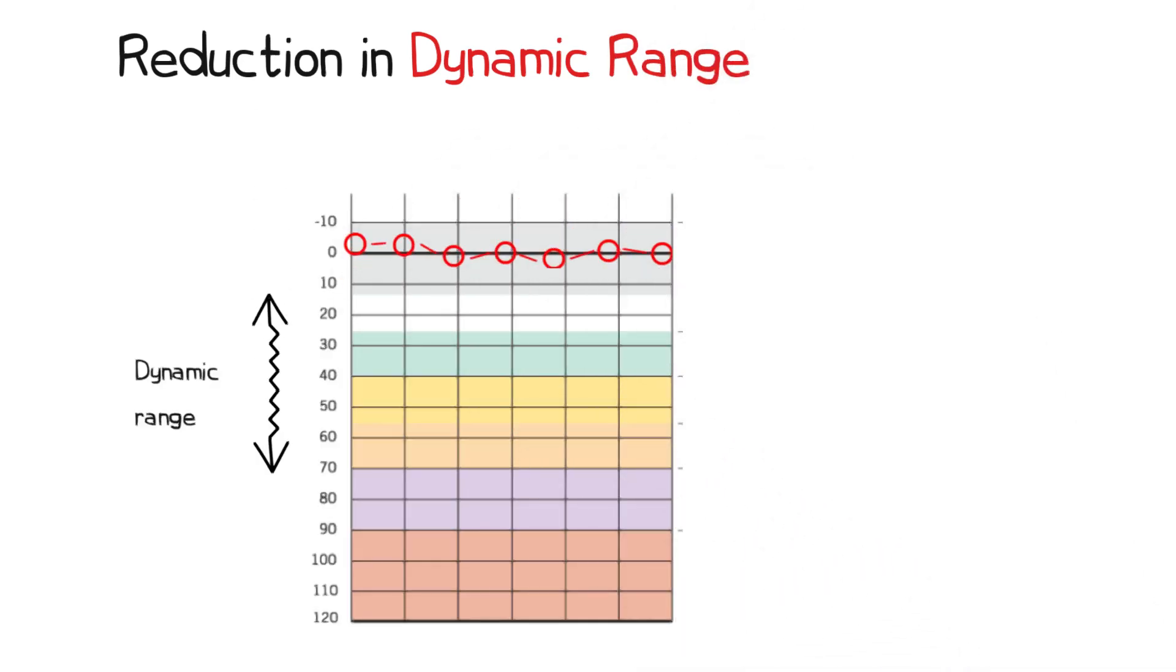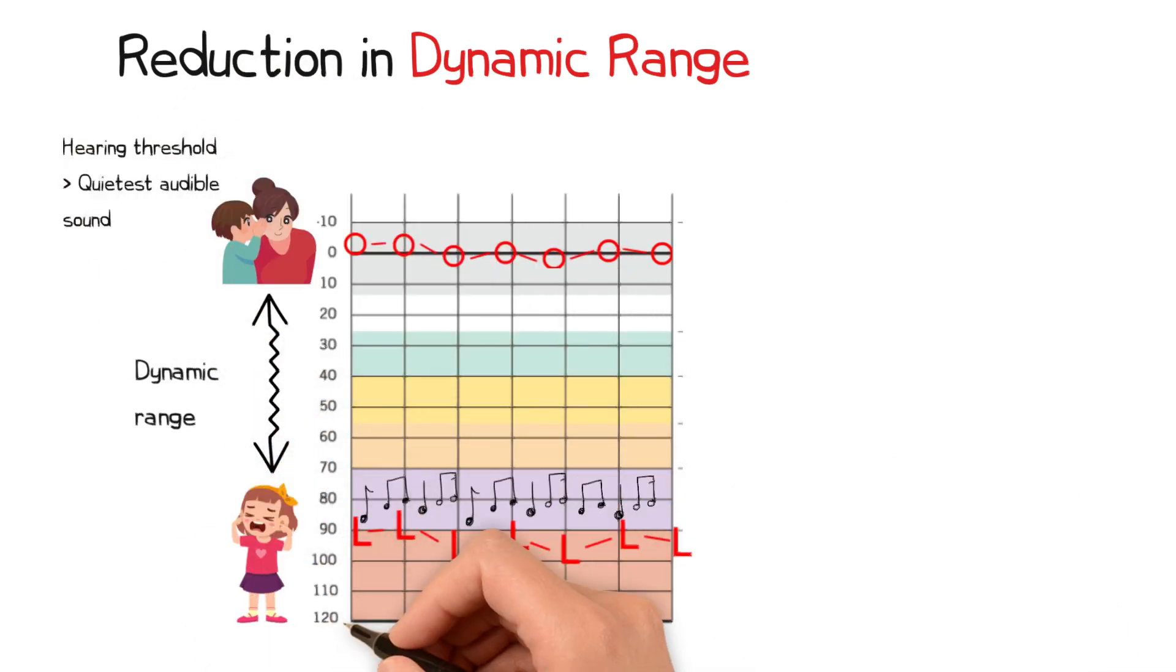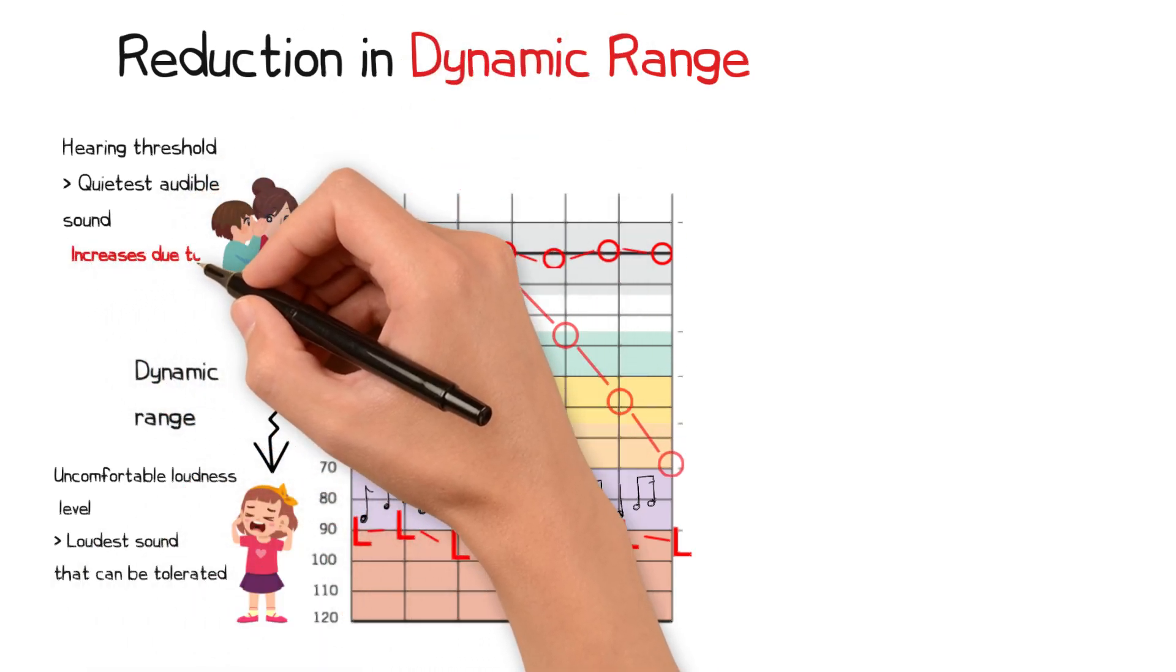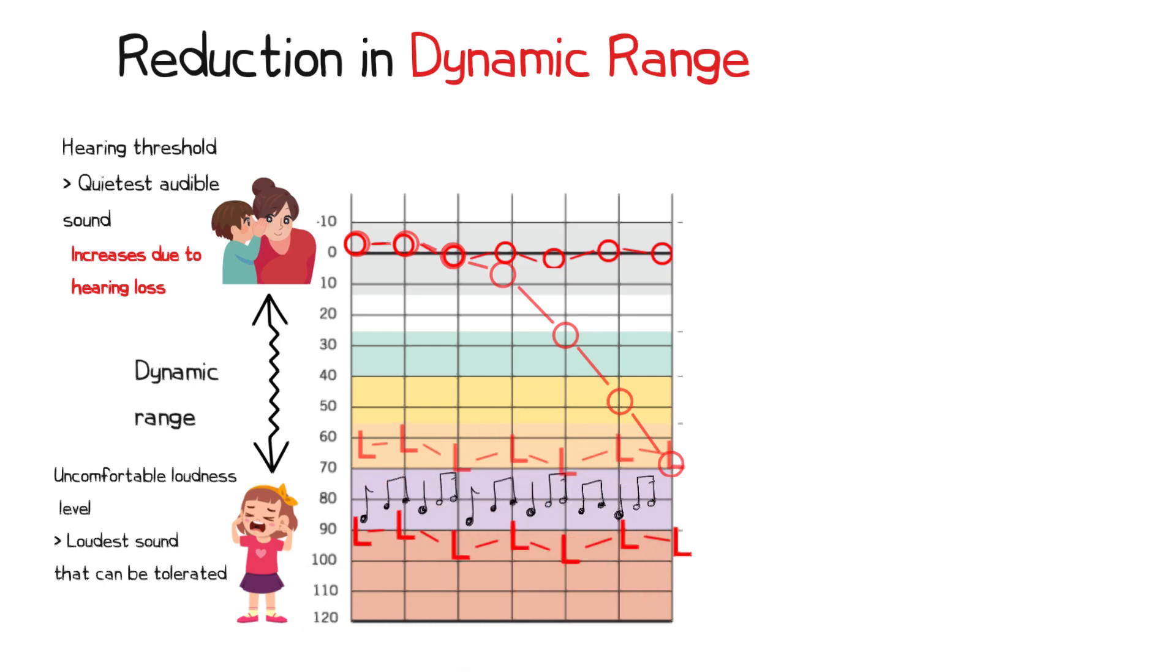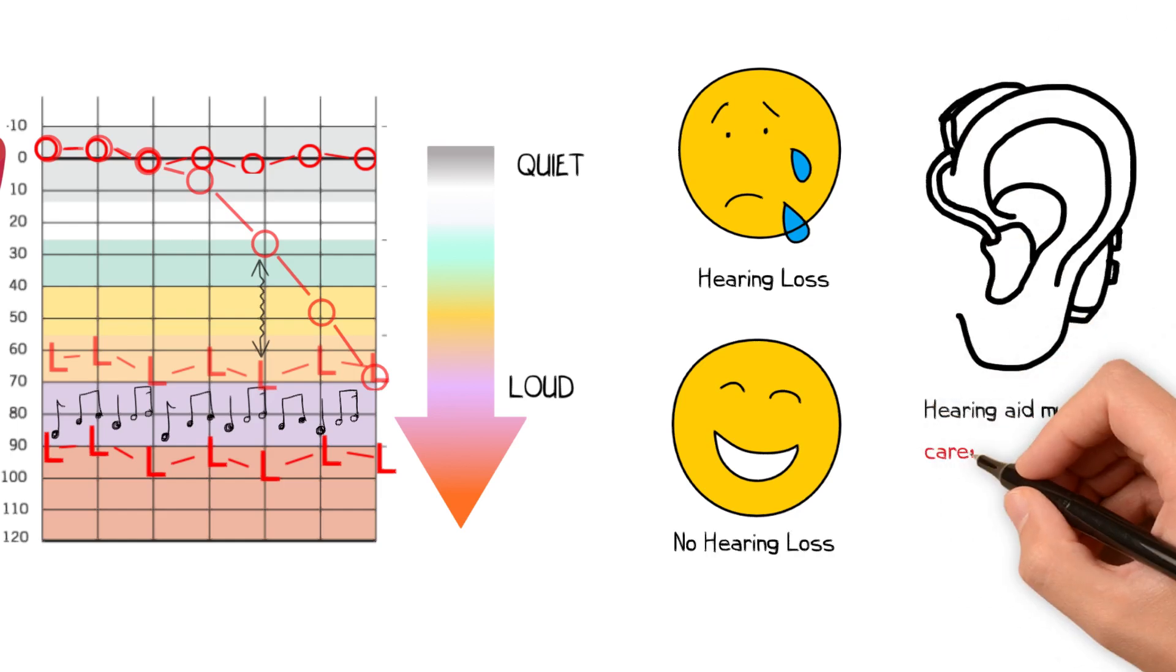Another feature typical of sensory presbyacusis is a reduction in the dynamic range. The dynamic range is the difference between hearing thresholds, the softer sound that can be detected, and the uncomfortable loudness level, the loudest sound that can be tolerated. In presbyacusis the hearing threshold rises due to hearing loss, while the uncomfortable loudness level reduces. This narrows the dynamic range, meaning that as sounds go from quiet to moderately loud, they are perceived as uncomfortably loud much more quickly than in individuals without hearing loss. This is why a hearing aid must be carefully programmed to ensure patient compliance.